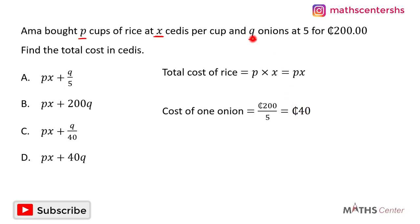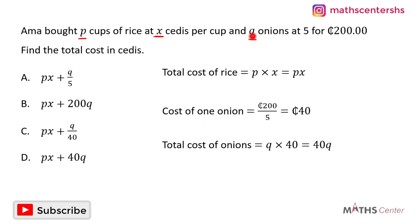Amma bought kale onions, so the total cost of the onions will be kale times the cost of one onion, which is 40. Kale times 40 gives us 40 kale.